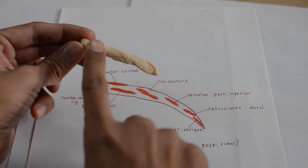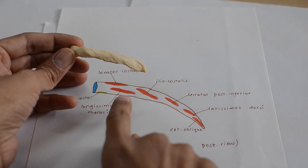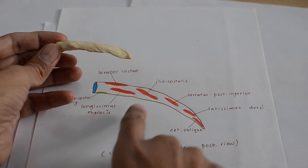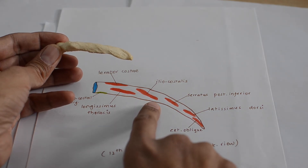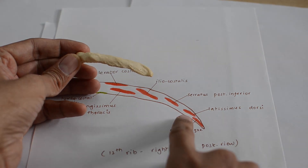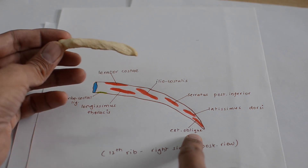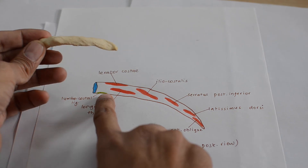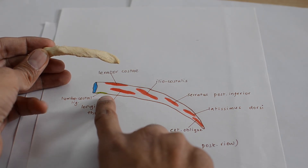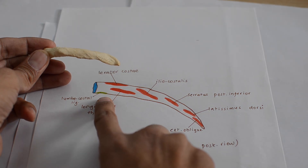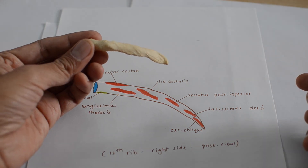In the posterior view showing the rough posterior surface, along the medial half there is attachment of levator costae, longissimus thoracis, and iliocostalis. Along the lateral half there is attachment of serratus posterior inferior, latissimus dorsi, and external oblique abdominis muscle. Just next to the head along the lower border, there is attachment of the lumbocostal ligament, running from the lower border of the 12th rib to the transverse process of the first lumbar vertebra.